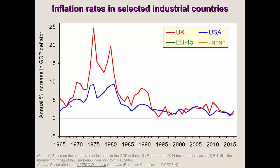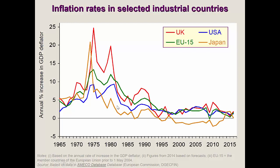The USA also experienced inflation from oil price increases, but eventually developed economies settled at around 2% inflation — the rate that central banks typically target and manage. The EU's original 15 countries followed a similar pattern. Japan experienced the same rises in living costs from oil prices but managed to bring inflation down as they were less reliant on Arab oil than the West.